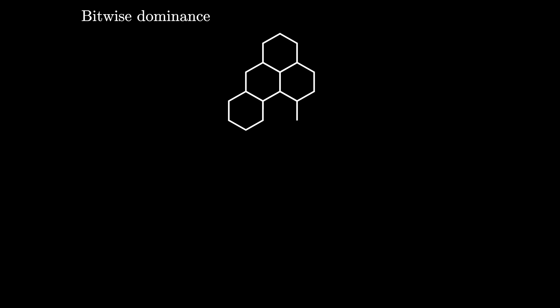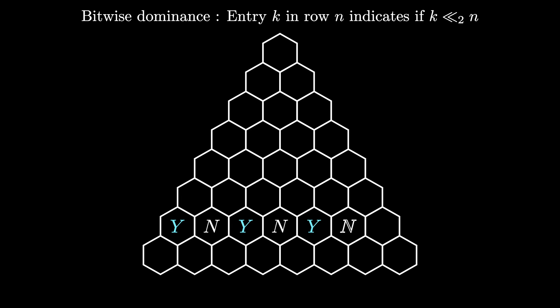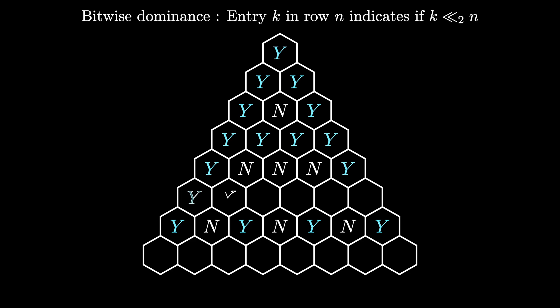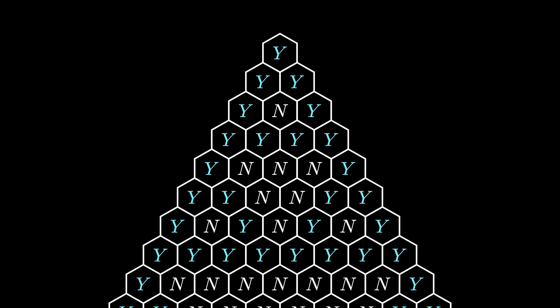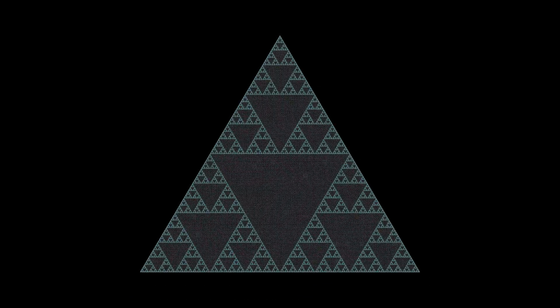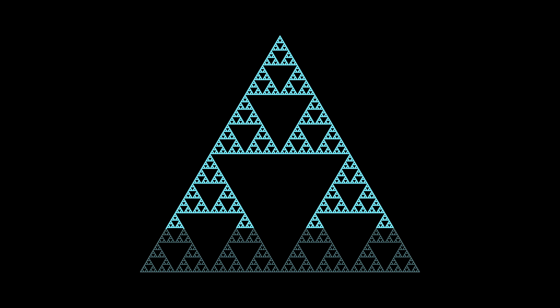Let's repeat this process for each positive integer and organize the information in a triangular array. In this triangular array, entry k in row n will indicate if k is bitwise dominated by n. We can fill in the rest of the rows just by checking for bitwise dominance. Just like we did for Pascal's triangle, let's extend this bitwise dominance triangle out to row 256. You should already see the outline of Pascal's triangle in the yeses. But if we fade out the nos and highlight the yeses, we see a clearer picture of the Sierpinski triangle.